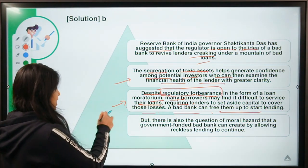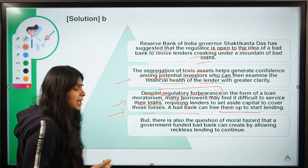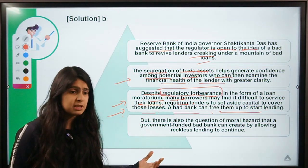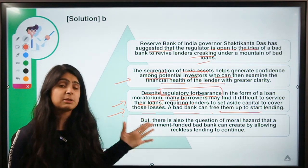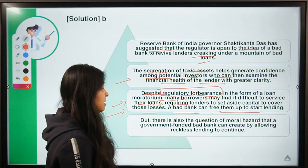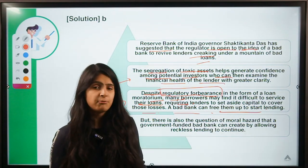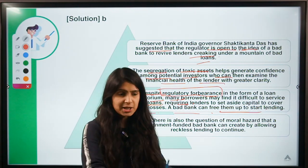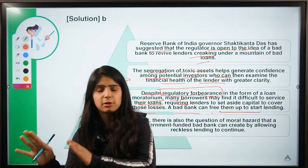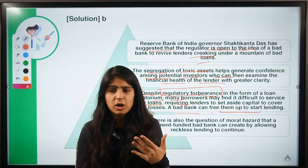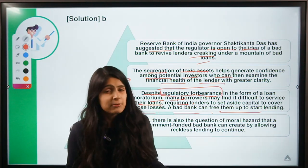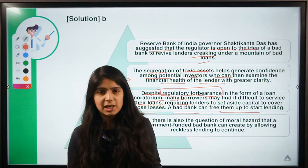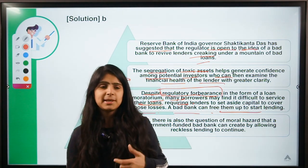Apart from banks, public confidence will be generated — that people can take loans, put their money into banks, invest in bank schemes, and their money is safe because the bank is not going to go bust because of NPAs. But there are certain criticisms associated with bad banks. If the government funds a bad bank to buy bad loans from banks, it might lead to carelessness among banks — they might think the bad bank will handle the NPAs, and they can do reckless lending.